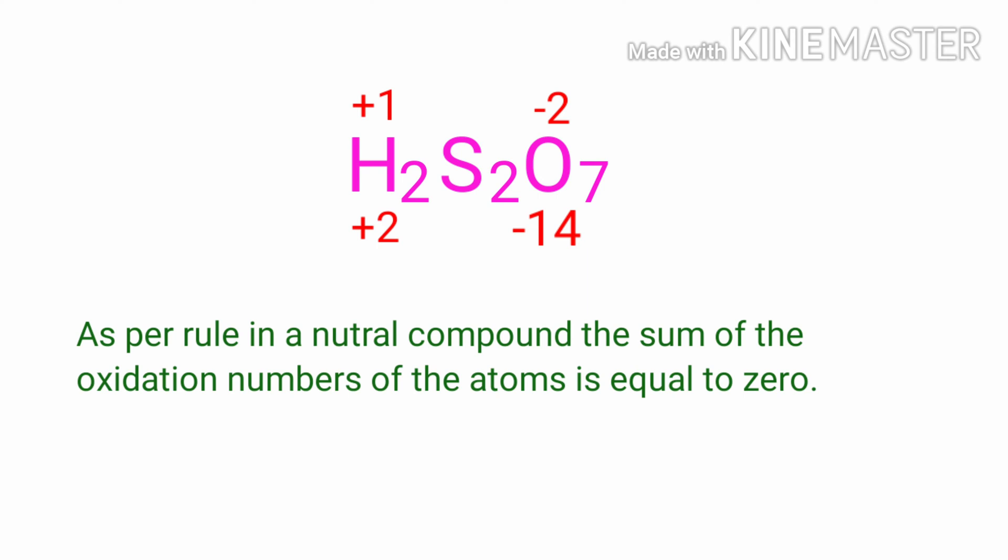As per rule, in a neutral compound, the sum of the oxidation numbers of the atoms is equal to zero. So the numbers along the bottom must add up to zero.